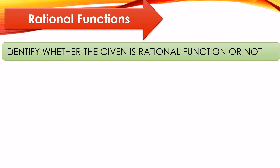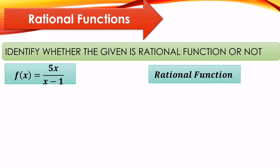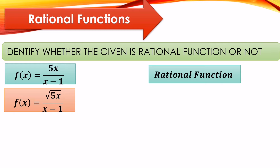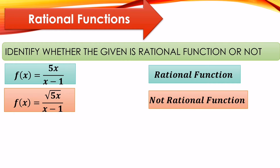Let us recall identifying whether a given is a rational function or not. First: f(x) = 5x over (x − 1). This is an example of a rational function because the numerator and denominator are polynomials. Another one: f(x) = √(5x) over (x − 1). This is not a rational function because it has a radical sign. Whether in the numerator or denominator, a radical sign automatically makes it not a rational function.